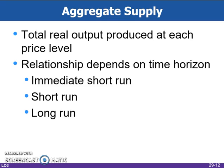Aggregate supply is a schedule or curve showing the level of real domestic output available at each possible price level. The relationship is determined on the basis of whether input prices and output prices are fixed or flexible.